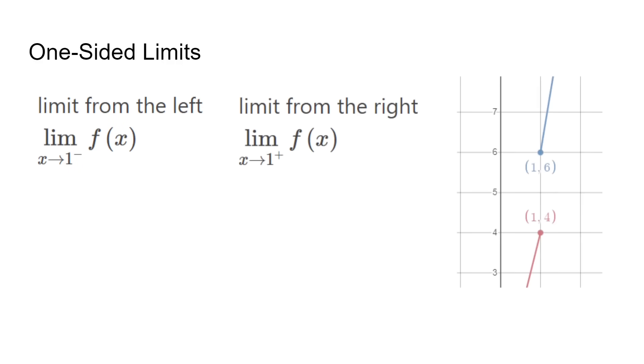Limits can also be one-sided and these are notated by a plus or minus sign next to the value that x approaches. A minus sign means from the left and a plus sign means from the right. In this scenario, the limit from the left is 4 and limit from the right is 6. Since the limit from both sides are different, the limit as x approaches 1 does not exist.